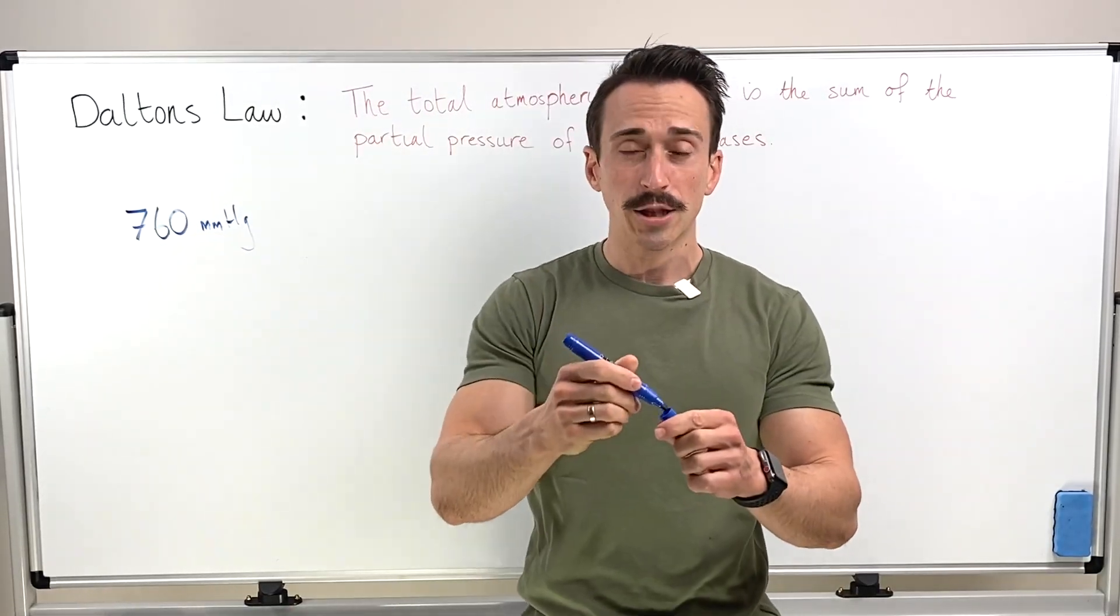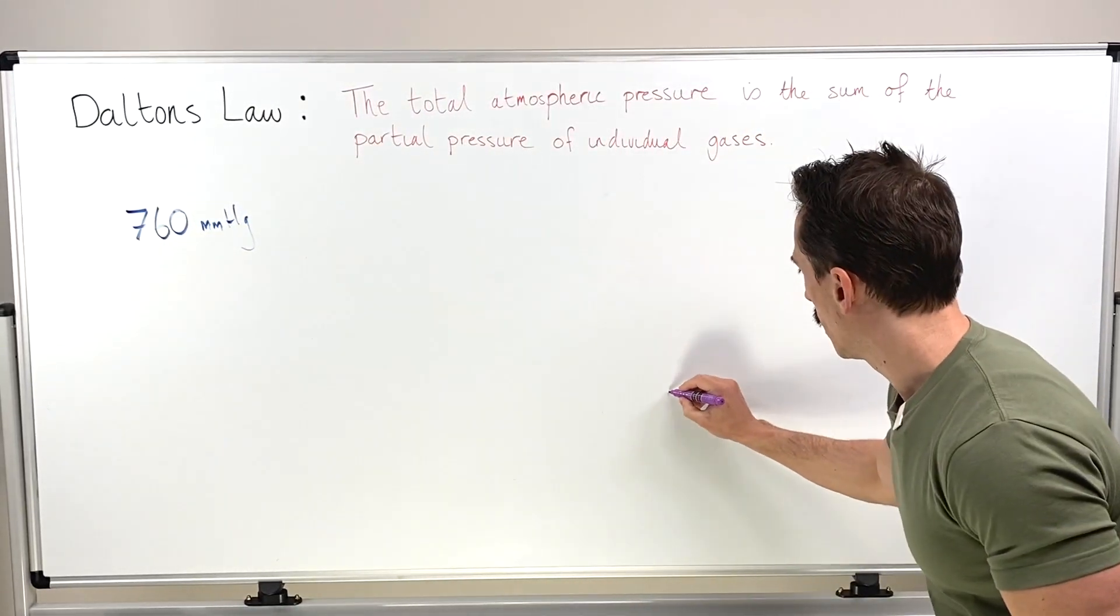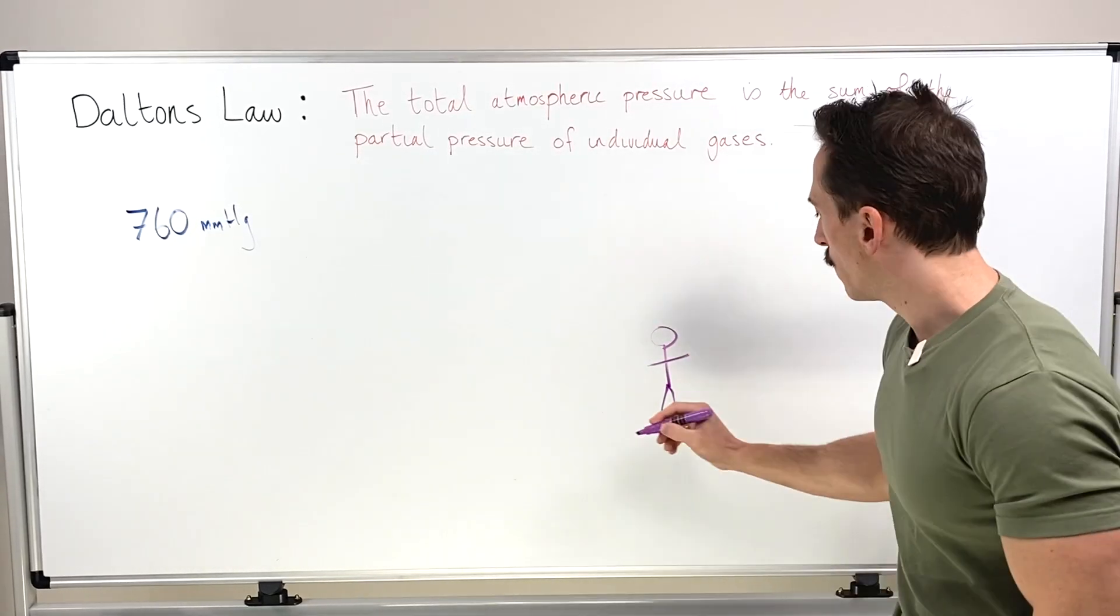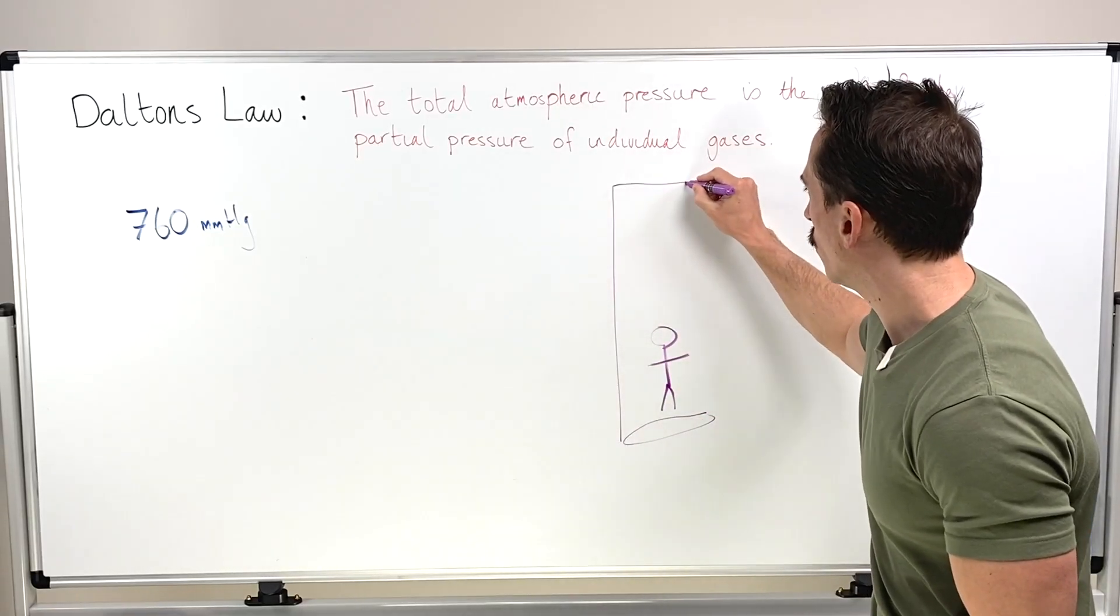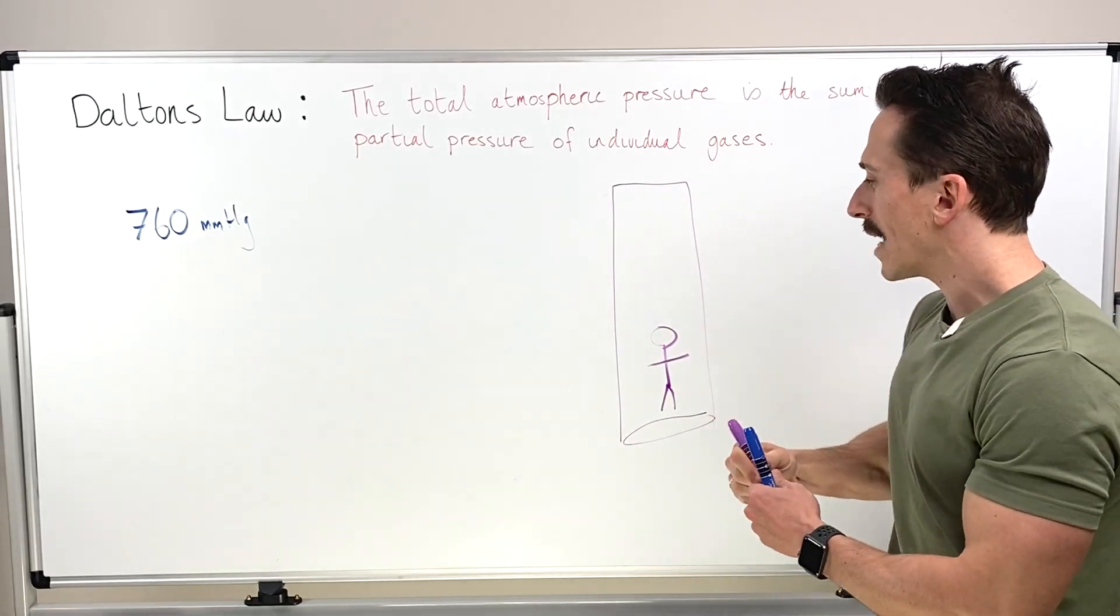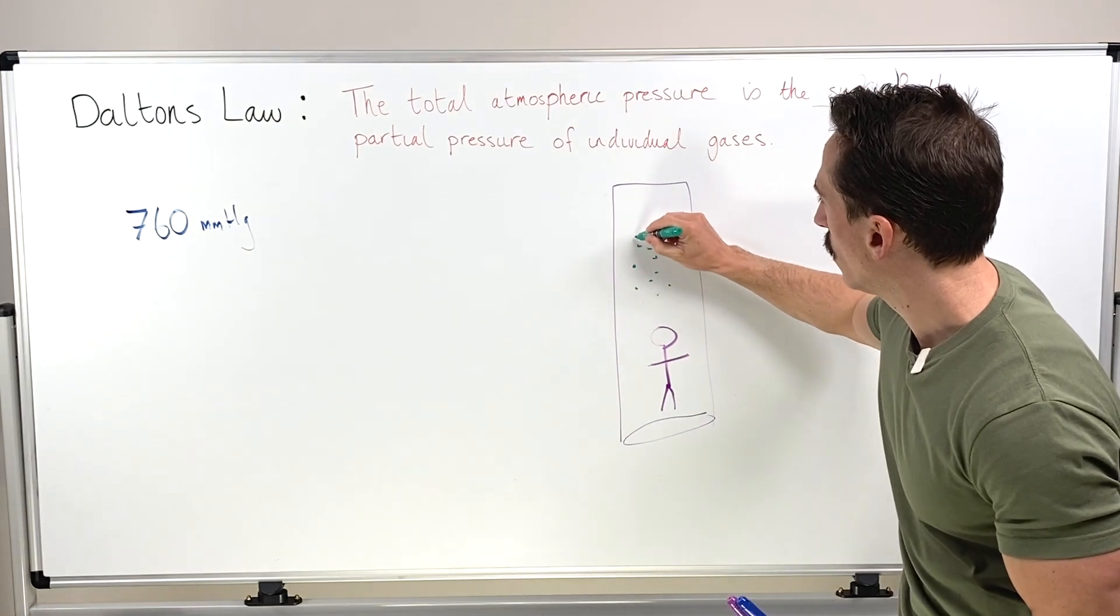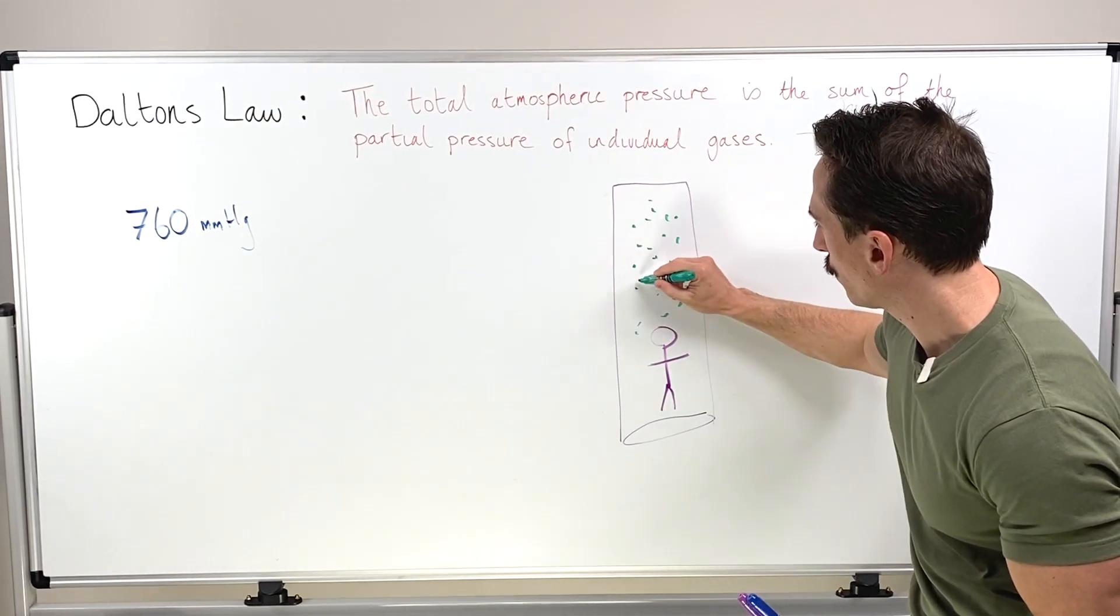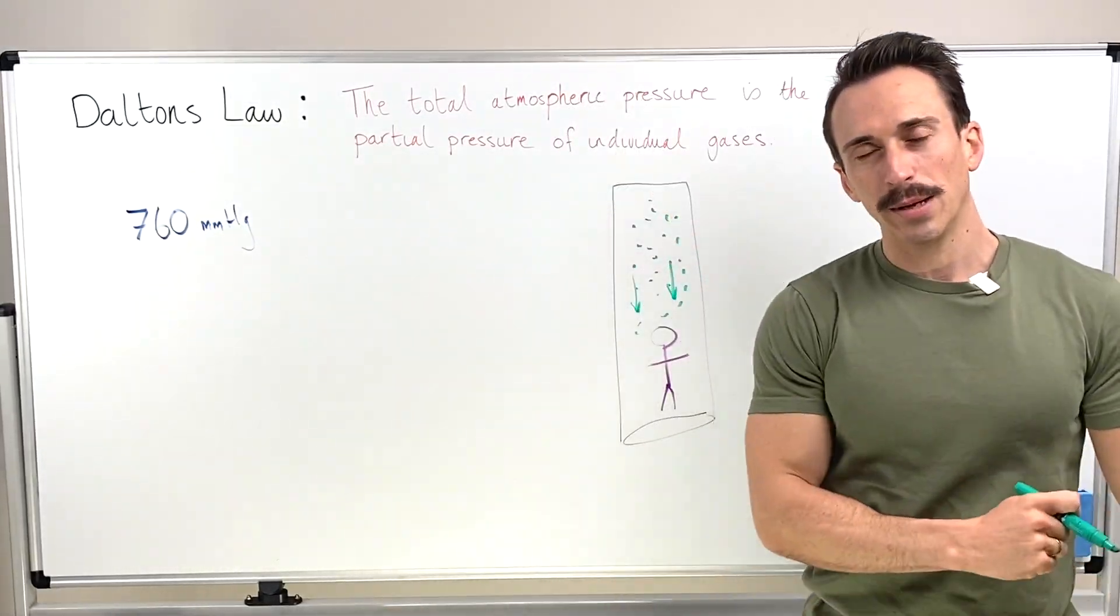Now, what this is actually referring to is the fact that if you were standing there at sea level, if you were to take a column of air directly above you, all the gas particles making up that column of air above you is exerting some form of pressure, and that pressure equals 760 millimeters of mercury.